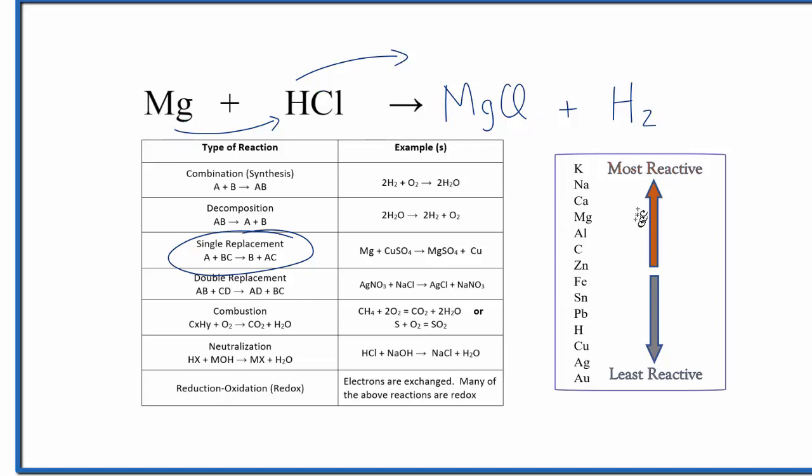So this is the activity series of the metal. Here's magnesium up towards the top. And hydrogen's right here. So magnesium, it's closer to more reactive. So it's going to be reactive enough that it can push the hydrogen out. This reaction will happen like this.